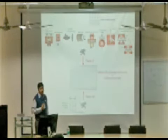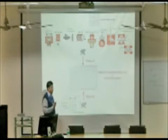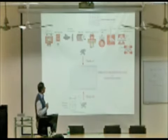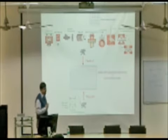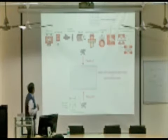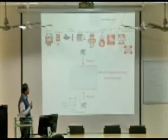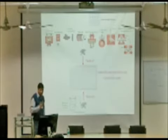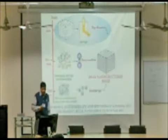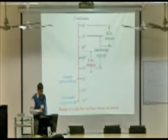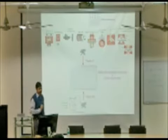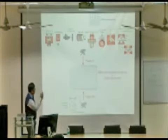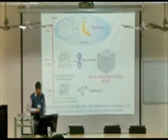There are two approaches to reduce the grain size: one is the top-down approach and another is the bottom-up approach. We are not falling under the bottom-up approach; we are only in the top-down approach. In the top-down approach, there are a number of techniques: ultrasonic shot peening, ball drop test, air blast shot peening, ball milling, high pressure torsion, sliding wear, ECAP, and RCS. We are into severe plastic deformation only — specifically high pressure torsion, ECAP, and repetitive processing.